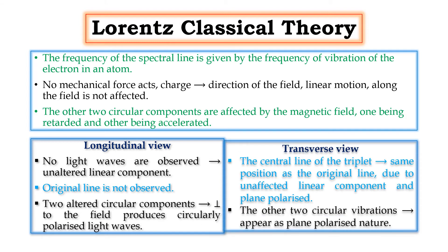For the transverse wave, the central line of the triplet is at the same position as the original line, since it has the same wavelength due to the unaffected linear component — this is plane polarized. The other two circular vibrations also appear plane polarized. So for longitudinal observation we get circularly polarized light and no original line, while for transverse observation we get plane polarized light and the central line acts as the original line.